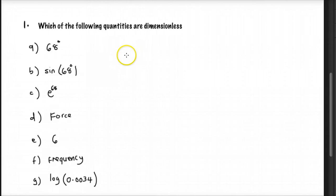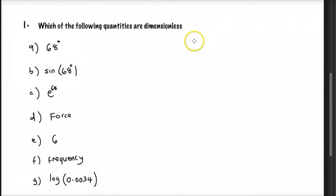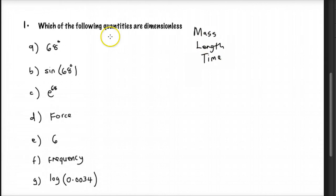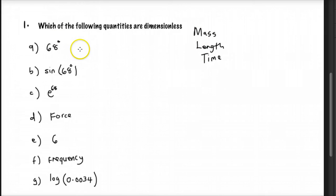The first question asks: which of the following quantities are dimensionless? Dimensionless quantities are quantities that don't have mass, length, or time. We can check from 1a to g. The first one is 68 degrees, which doesn't have mass, length, or time, so this quantity is dimensionless.